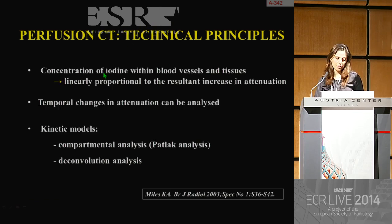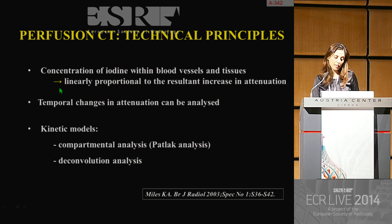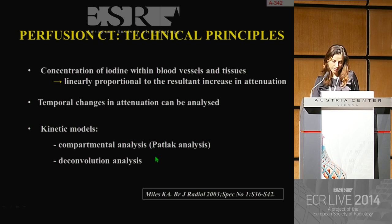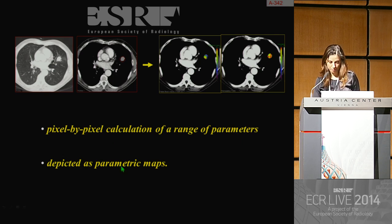Perfusion CT is based on a rapid series of dynamic contrast-enhanced CT acquisitions during the administration of contrast material, followed by the generation of arterial and tumoral time-density curves in order to analyze the temporal changes in blood vessels and tissues. A dedicated software allows calculation of perfusion parameters represented on colored parametric maps. The concentration of iodine within blood vessels and tissues is linearly proportional to the resultant increase in attenuation. Temporal changes in attenuation can be analyzed using kinetic models such as compartmental analysis or deconvolution analysis, with pixel-by-pixel calculation of parameters depicted as parametric maps.